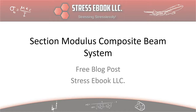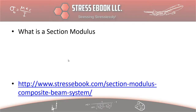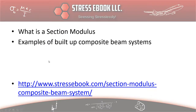The section modulus is a very important measure of the stiffness of a system. What we will cover in this blog post is, to begin with, what exactly is a section modulus. Then we will focus on some examples of built-up composite beam systems, such as shear web systems which have a web, some caps, doublers, and stuff like that.